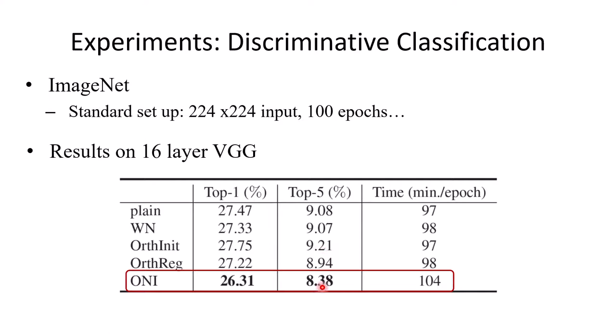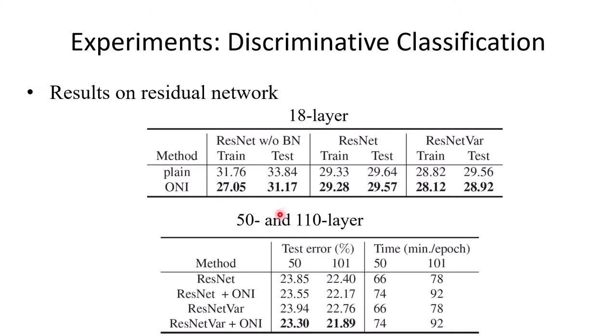The effectiveness of ONI is further validated on large-scale ImageNet classification. For example, on 16-layer VGG net, we obtain remarkable improvement in performance. For the residual network, our method can also work well.